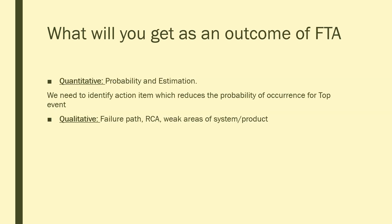By using FTA we get two outcomes: quantitative and qualitative. For the quantitative outcome, you get the probability of occurrence of the top event, which you can estimate for your project. For the qualitative outcome, since FTA is a pictorial format, you get a detailed failure path and a root cause analysis, and you can also identify weak areas of the system or product.